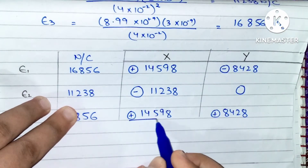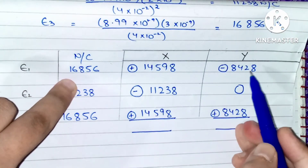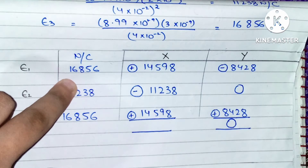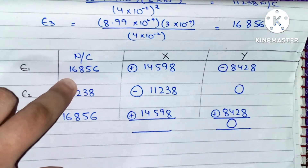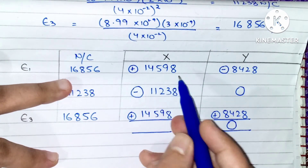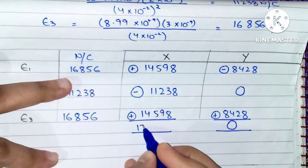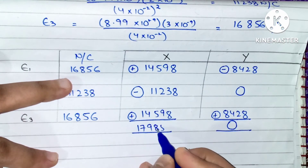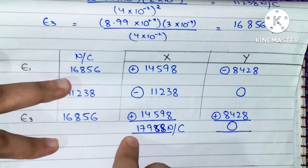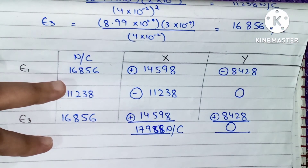Now we add up all the values to find the total electric field. The y-components are −8,428 and +8,428, which cancel out completely, giving zero — so there is no y-component in the total electric field. For the x-components, +14,598 and +14,598 add to give 17,958 minus the 11,238 negative contribution, yielding approximately 17,958 N/C. Since this is positive, the total electric field direction is toward the positive x-axis.